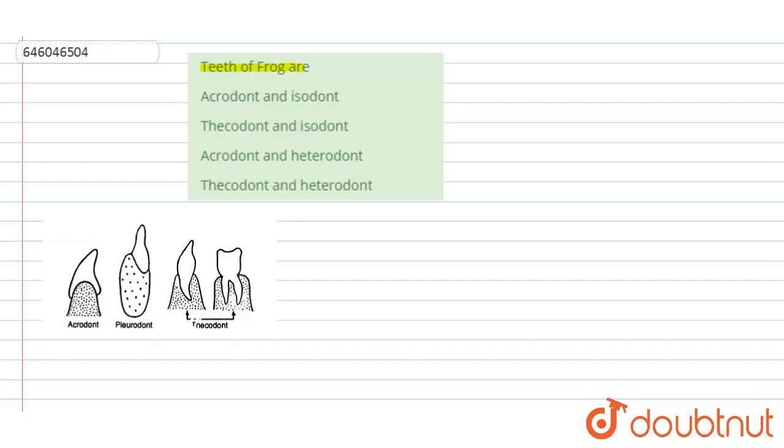The question is: Teeth of frog are - first option is acrodont and isodont, second is thecodont and isodont, third option is acrodont and heterodont, and the fourth option is thecodont and heterodont. So when we talk about teeth in general...